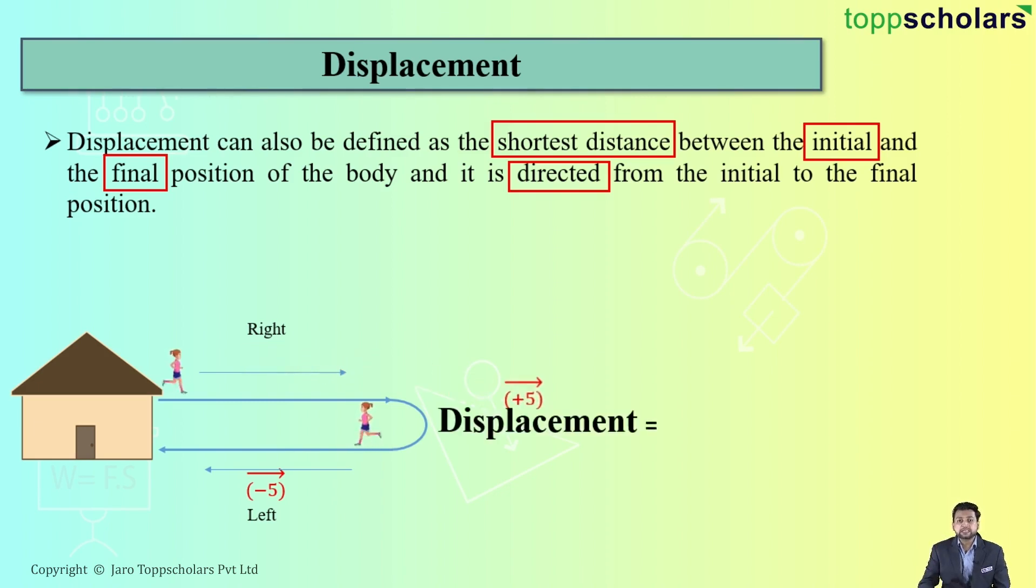And hence the displacement can be given as plus 5 plus minus 5 and that total will be equal to zero. Because in that whole scenario, if I will consider what is the initial position? The person's home.